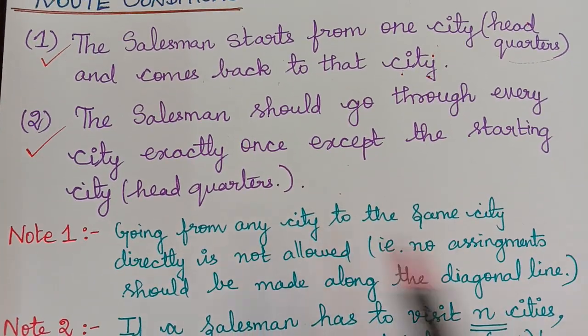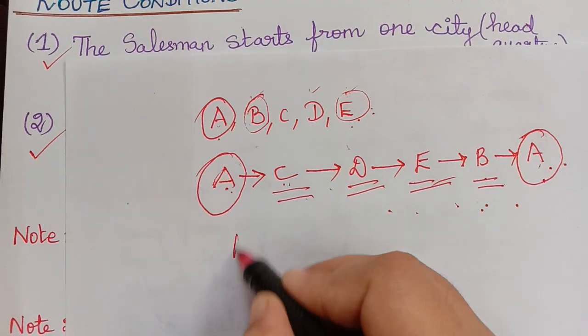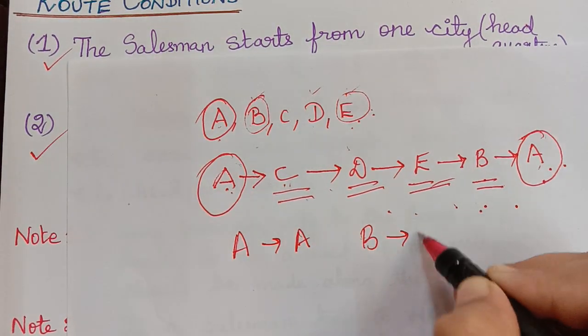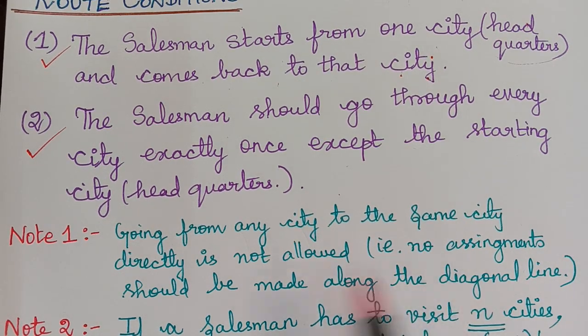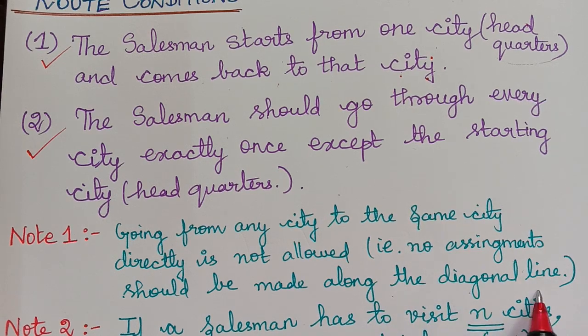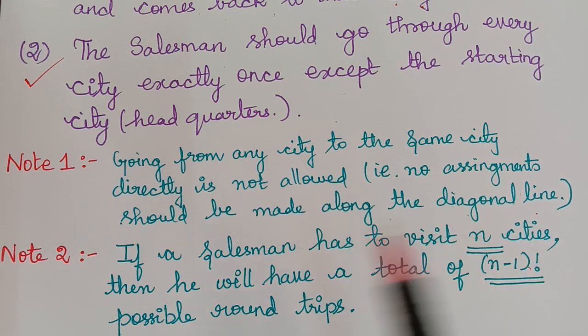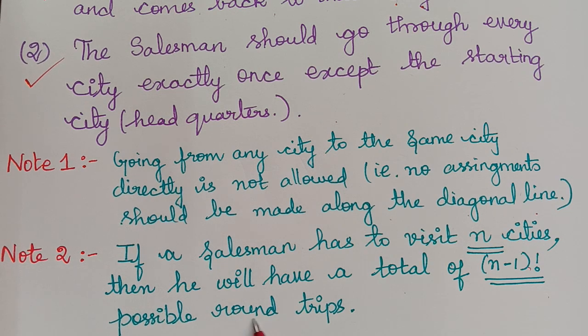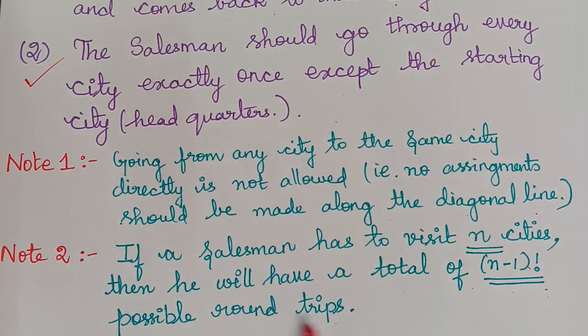And going from any city to the same city directly is not allowed. That is going from A to A or from B to B or from C to C, such things are not allowed. So in that case no assignments should be made along the diagonal line. And second note here is if a salesman has to visit n cities then he will have a total of n-1 factorial possible round trips. So the number of possible round trips that a salesman will take to visit n cities is n-1 factorial ways.